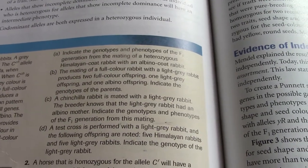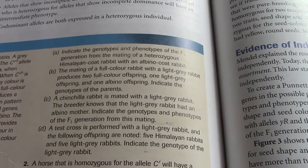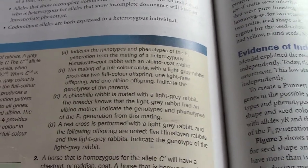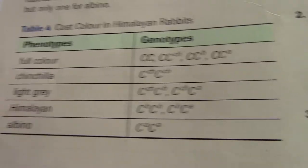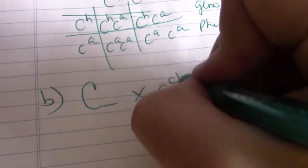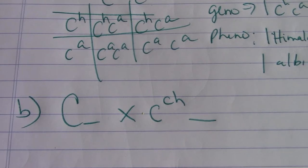So B says the mating of a full-color rabbit with a light gray rabbit produces two full-color offspring, one light gray offspring, and one albino offspring. Indicate the genotypes of the parents. So we've got a full-color rabbit, and then it's mated with a light gray rabbit. So this is going to be, one of the alleles is going to be CCH, and we don't know which one is the other one. Okay? But we know that there's an albino offspring. Okay, so there's an albino. So there has to be a CA here, and there has to be a CA here as a result.